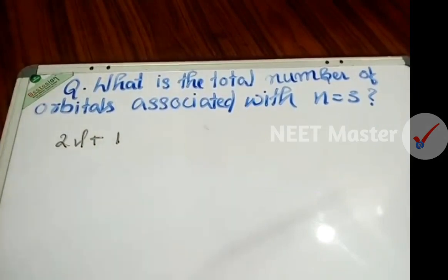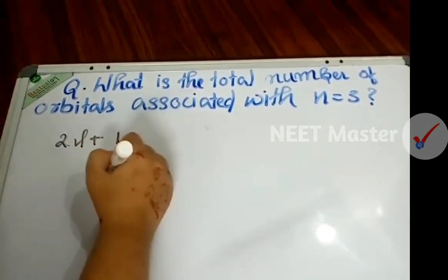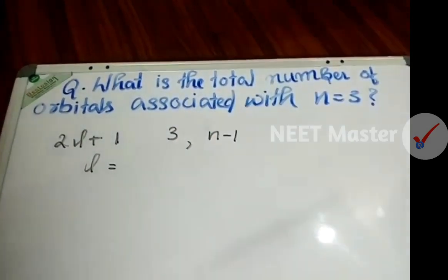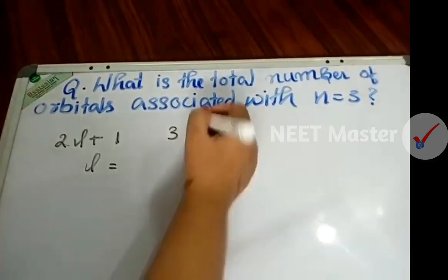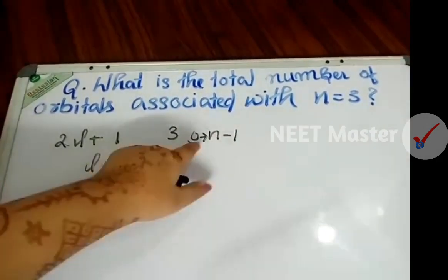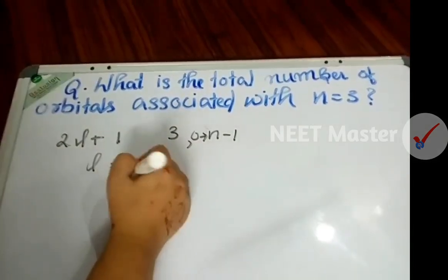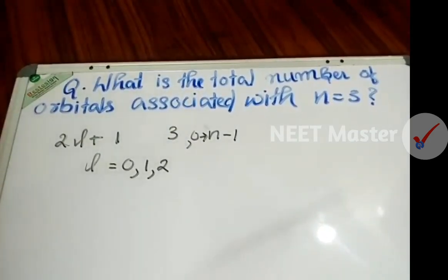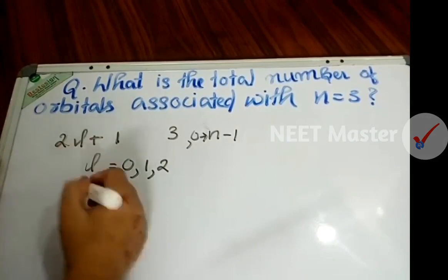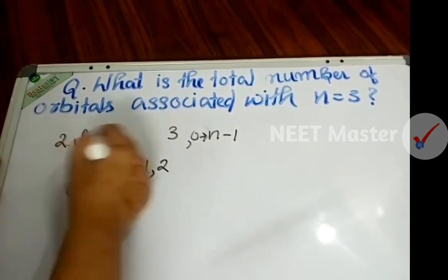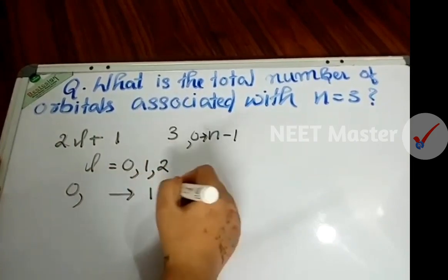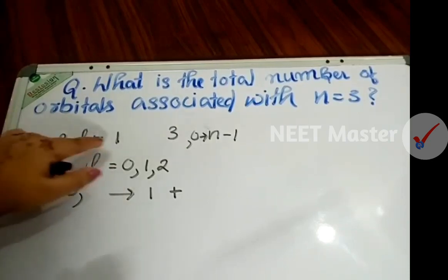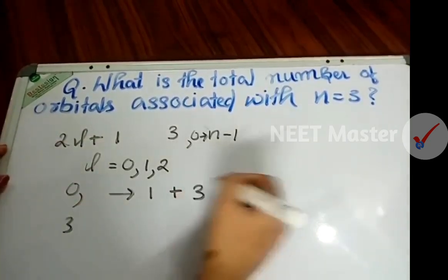When n=3, l can be 0, 1, 2 — these are three values of l. For l=0: 2(0)+1 = 1 orbital. For l=1: 2(1)+1 = 3 orbitals. For l=2: 2(2)+1 = 5 orbitals. Total = 1 + 3 + 5 = 9 orbitals.